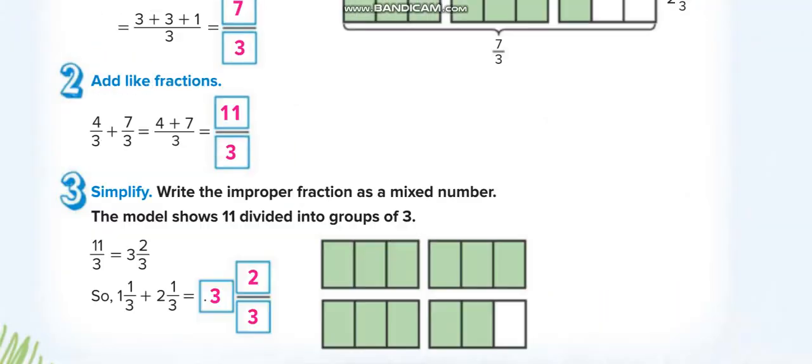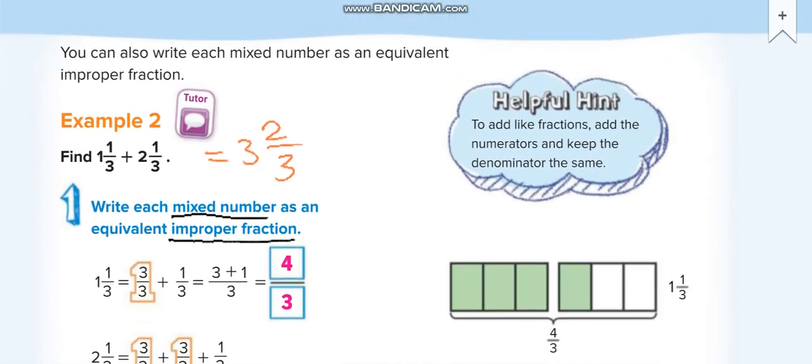Example two. Here first we add the whole numbers, the whole numbers are 1 and 2, 1 plus 2 is 3. Then we will add the fractions, 1 over 3 plus 1 over 3 equals 2 over 3, so 3 whole 2 over 3.